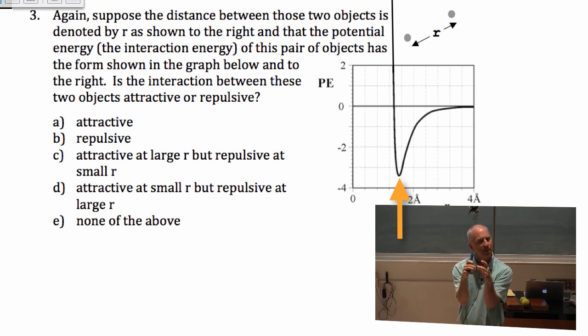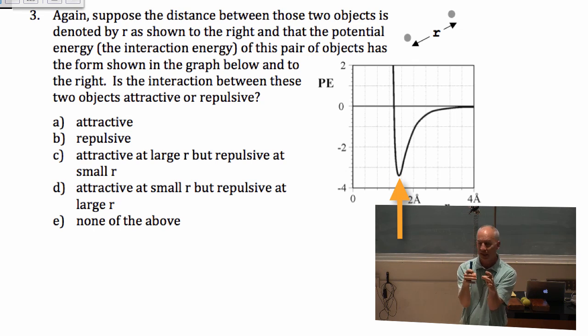When you're right down here at the bottom, the slope is zero. So that's exactly when there's no force attracting or repelling. And that's where they're at their bond length. This is actually the bond length right here, this 1.6 angstroms or whatever that is.